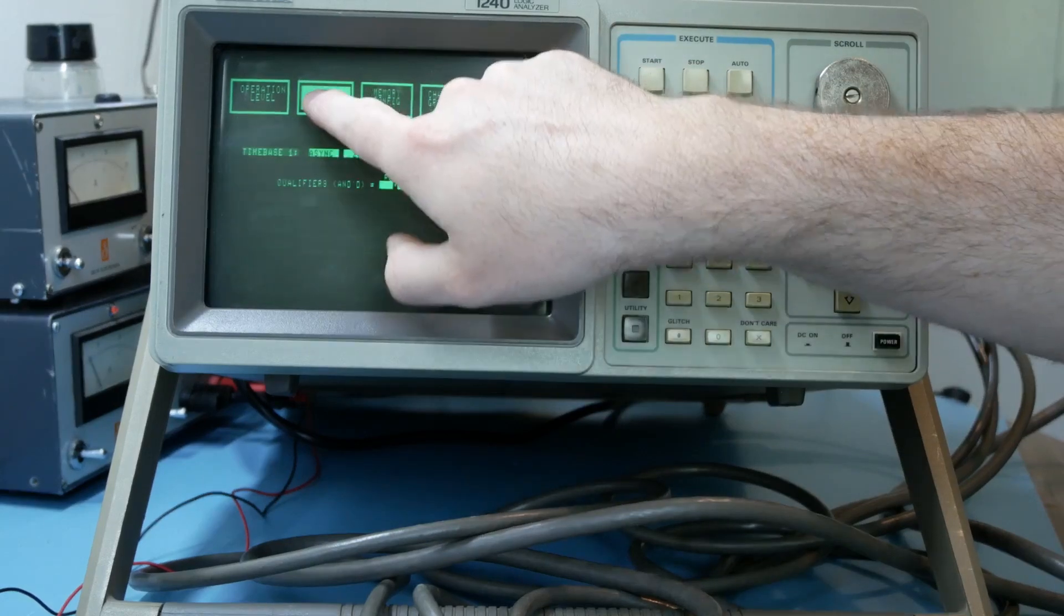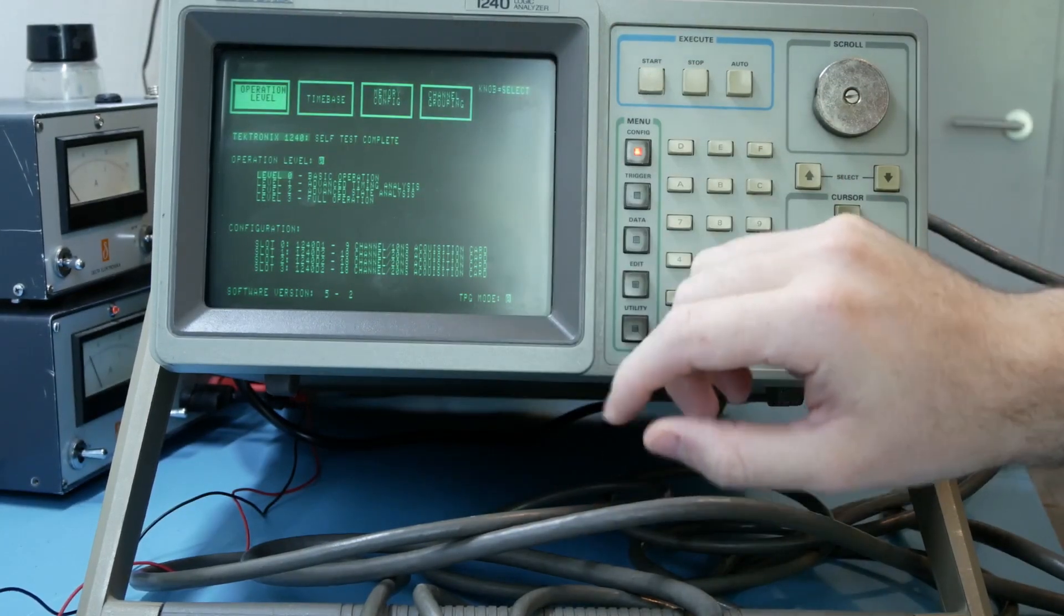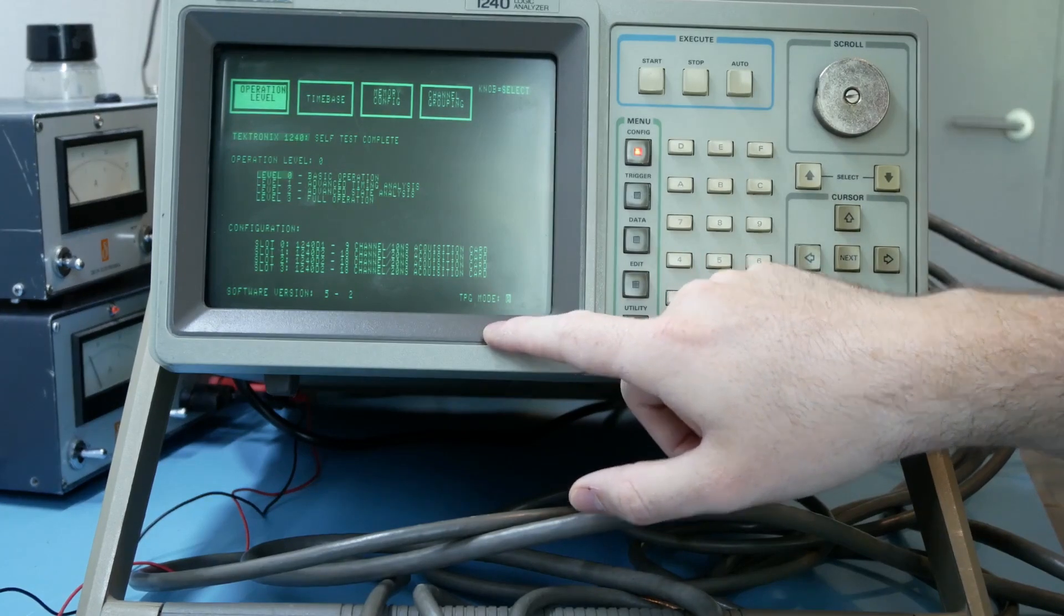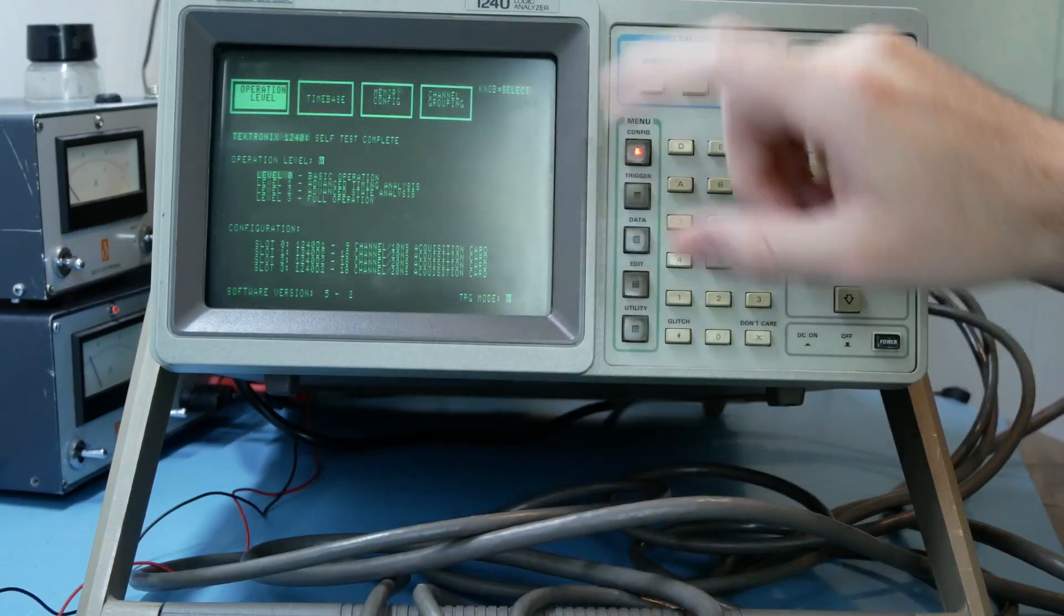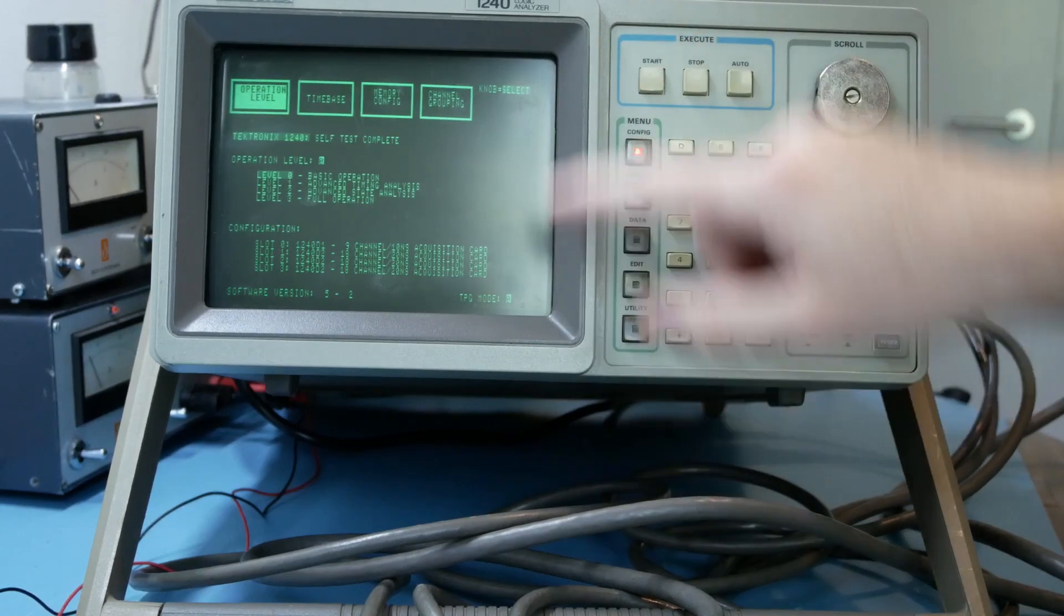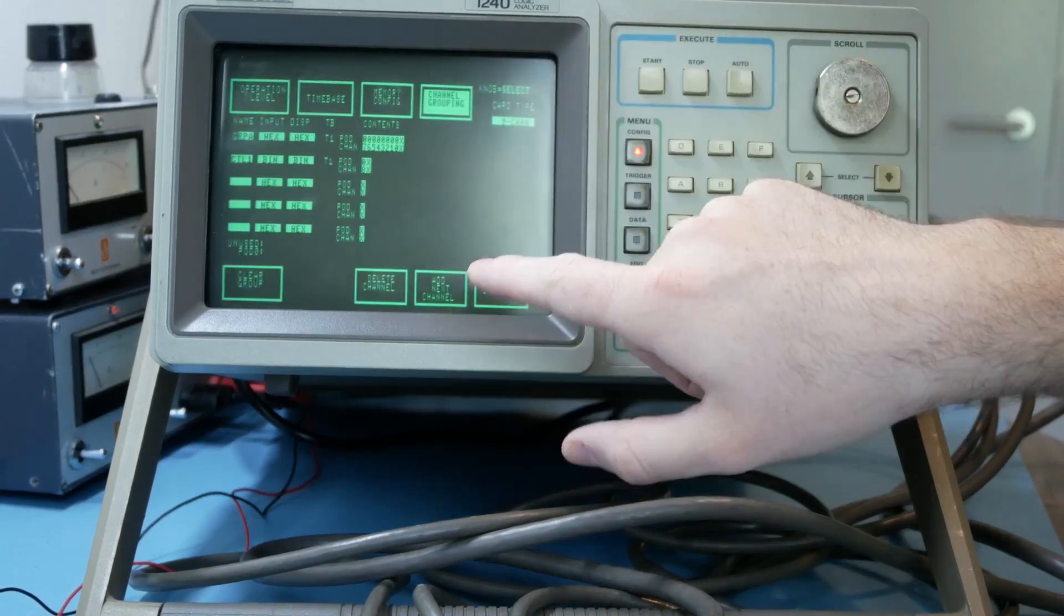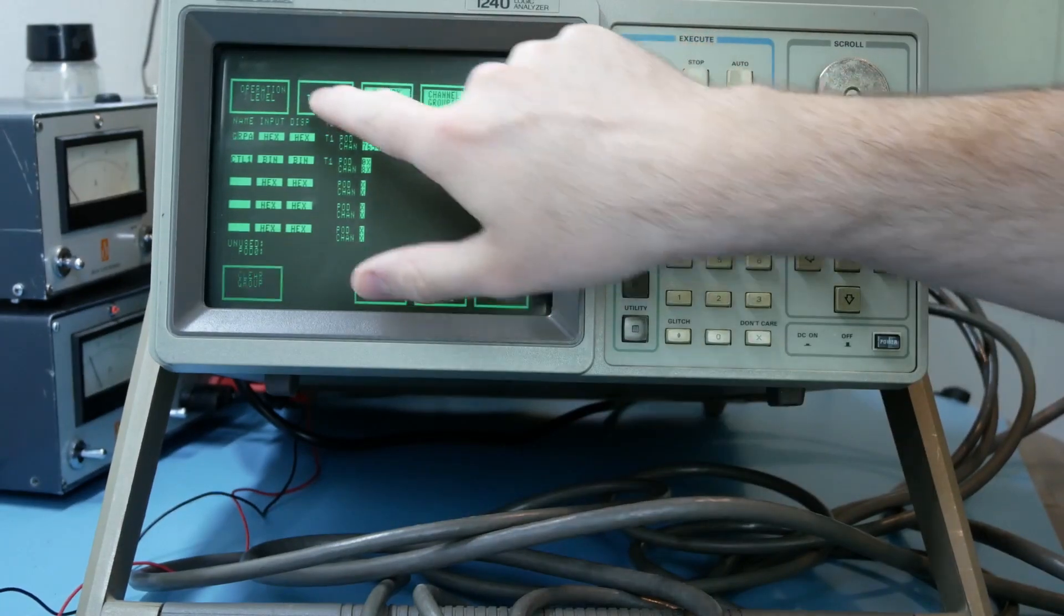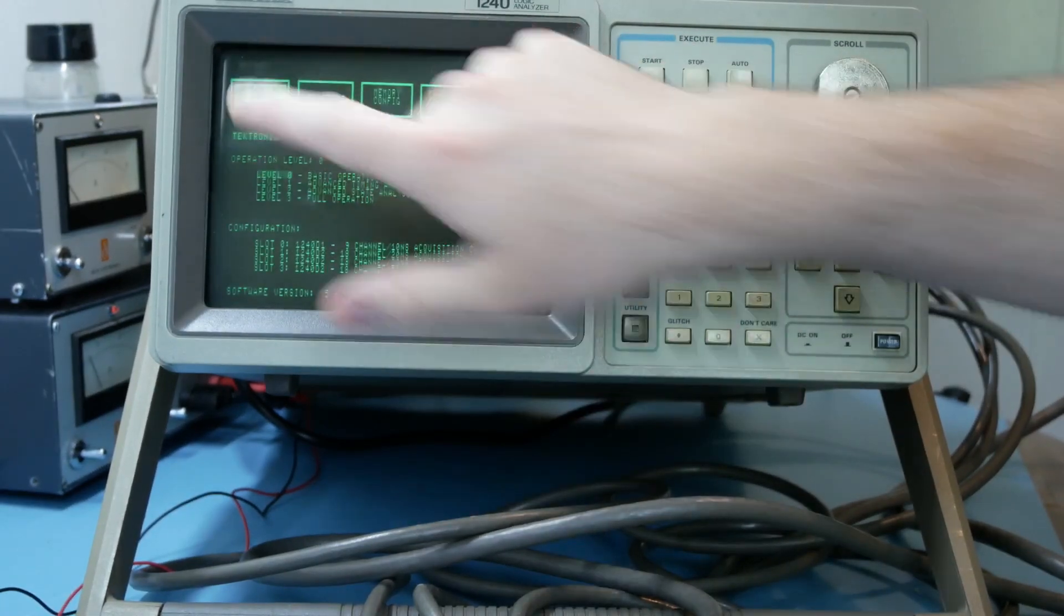Now these instruments have a CRT touchscreen and how it works is quite smart. There are some infrared LEDs in the sides of the CRT and some infrared sensors. And if you touch on the CRT you interrupt the infrared beams going all around and the instrument knows that you touched a button. Neat.